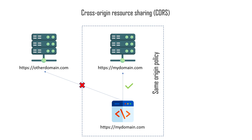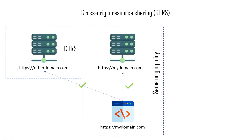Nowadays it is a common scenario when UI and API are hosted on different origins. That is where same origin policy might become a problem, and that is where cross-origin resource sharing comes into the rescue. It extends same origin policy and provides a mechanism of accessing resources located in other domains.